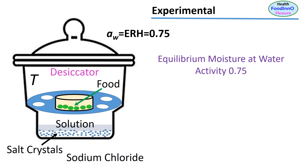However, the equilibrium moisture content will not be the same as the sample's original moisture content, due to loss or gain of moisture during the equilibration process. For example, if the sample contains high moisture and the relative humidity of the chamber is 0.1, then a significant amount of moisture will be lost to reach a water activity of 0.1.